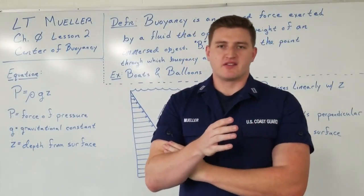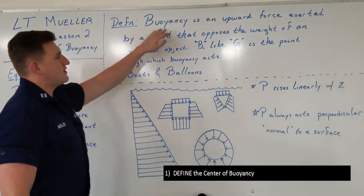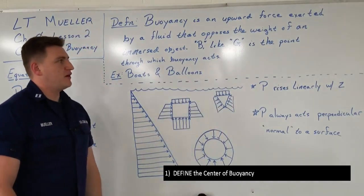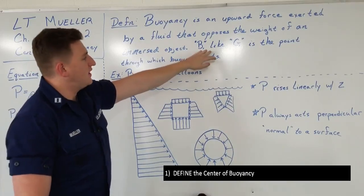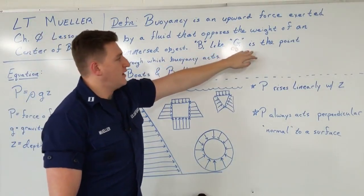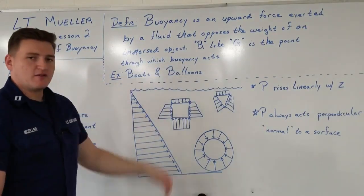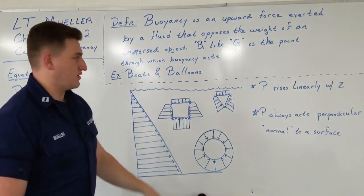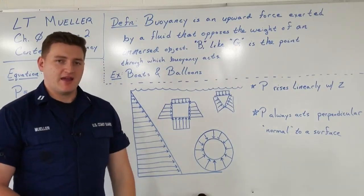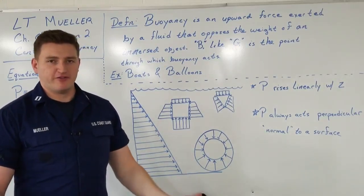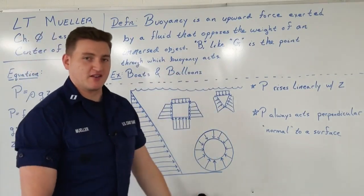Now that we've seen the objectives for this lesson, let's take a look at the definition of buoyancy and the center of buoyancy. Buoyancy itself is an upward force exerted by a fluid that opposes the weight of an immersed object. B, which is what we're going to call the center of buoyancy, just like G from the last lesson — the center of gravity — is the point through which buoyancy acts. Examples of this are boats, which have a force of buoyancy caused by the water they're immersed in, and balloons. Balloons have a force of buoyancy caused by the air around them. Air and water are both fluids, and a fluid always, by definition, exerts a force of buoyancy on whichever object is immersed.